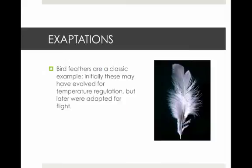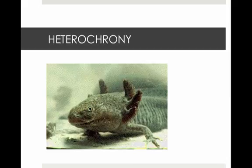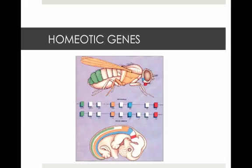Speciation falls between micro and macro evolution. Exaptation is when a structure evolves and functions in one environment but can perform additional functions in a new environment. Allometric growth is the variation in the relative rates of growth of various parts of the body, which helps shape the organism. Slight changes in these growth rates can dramatically change adults, causing heterochrony — evolutionary changes in the timing or rate of development — which can involve the switching on and off of genes. Homeotic genes determine where an organism's parts are placed, and changes in homeotic genes can result in macro evolution.